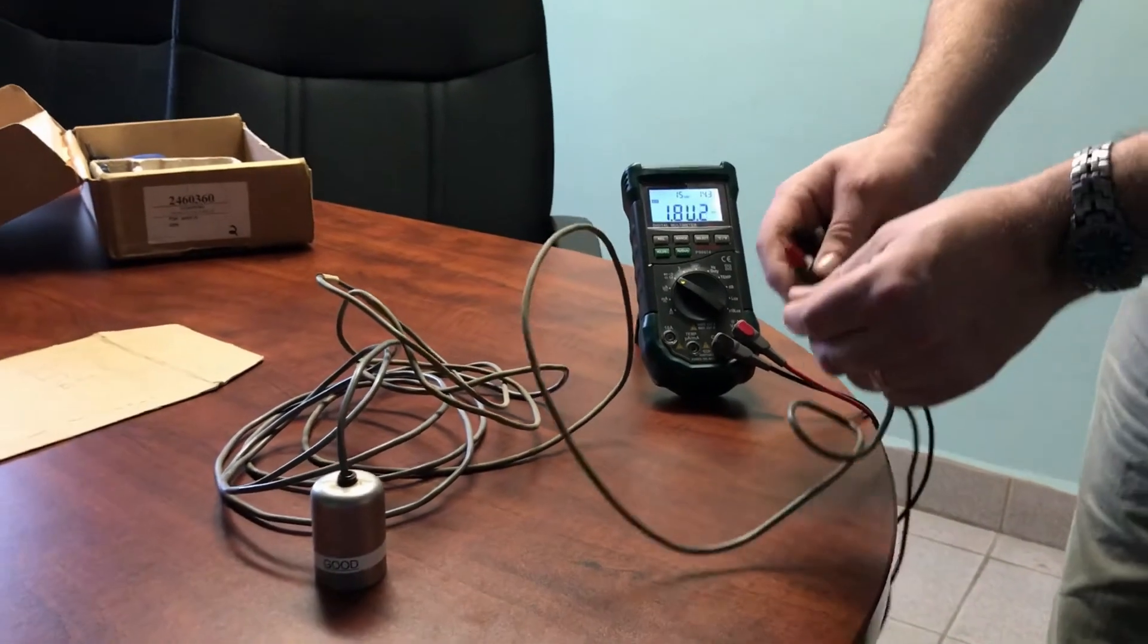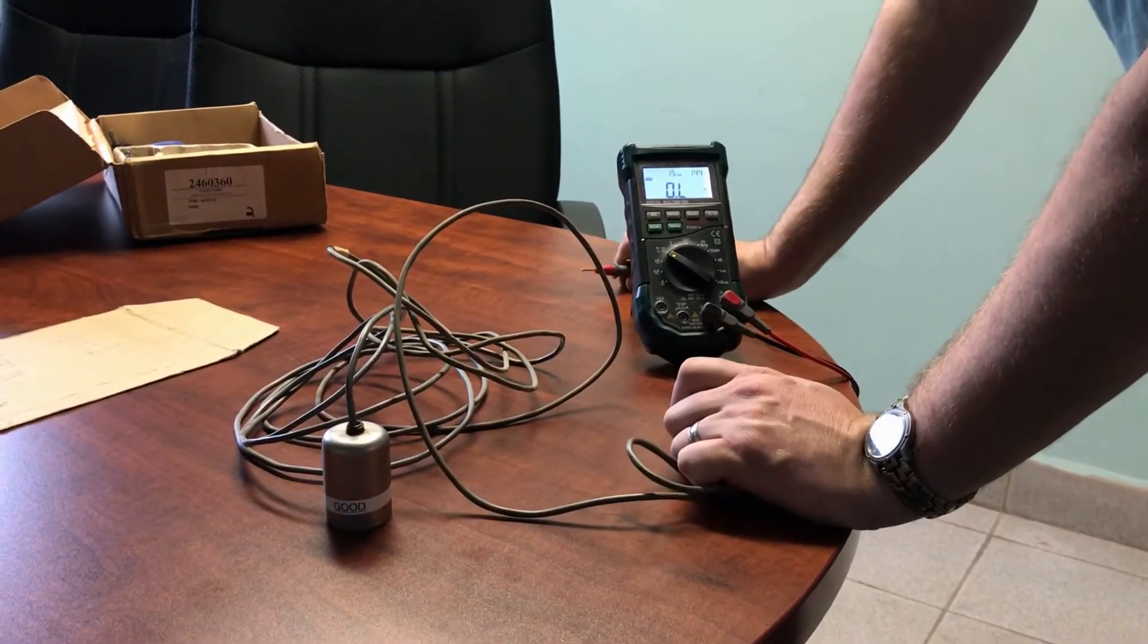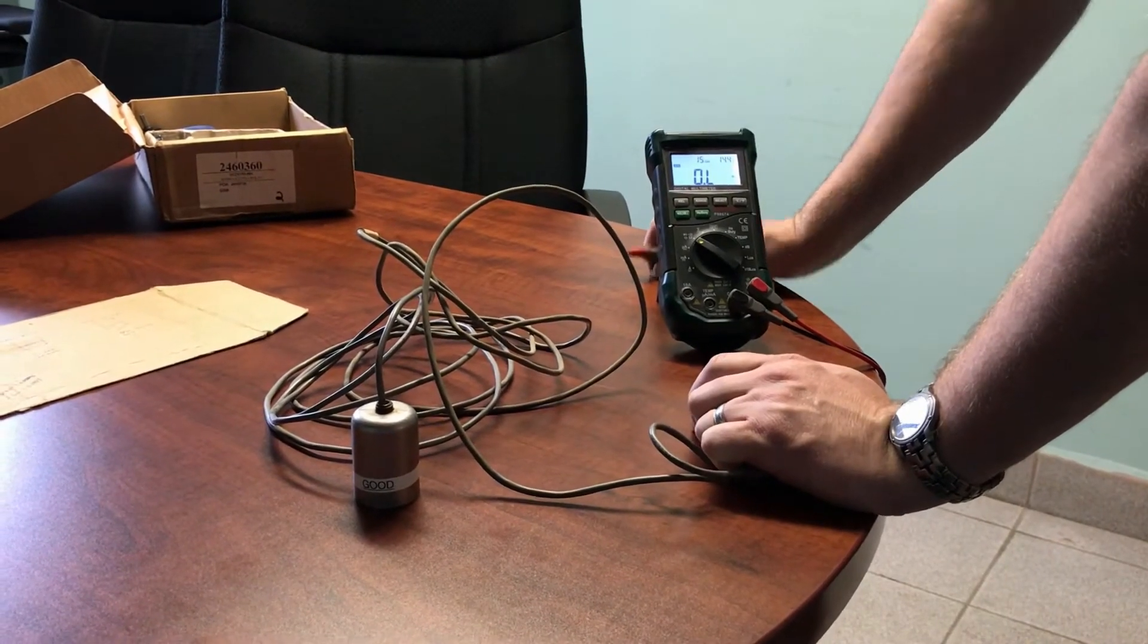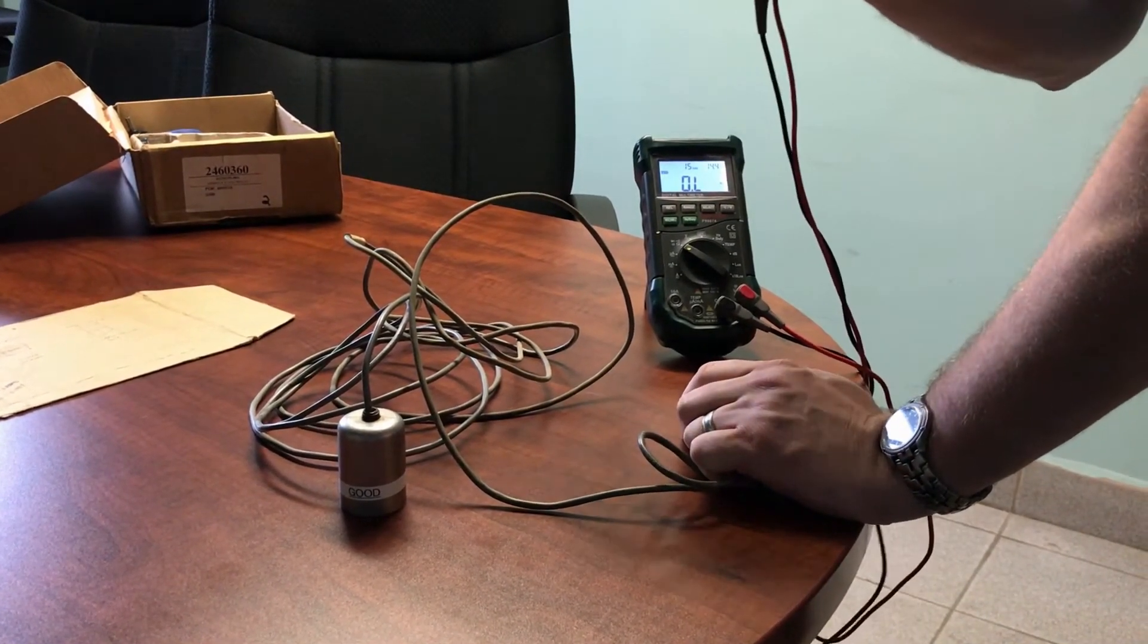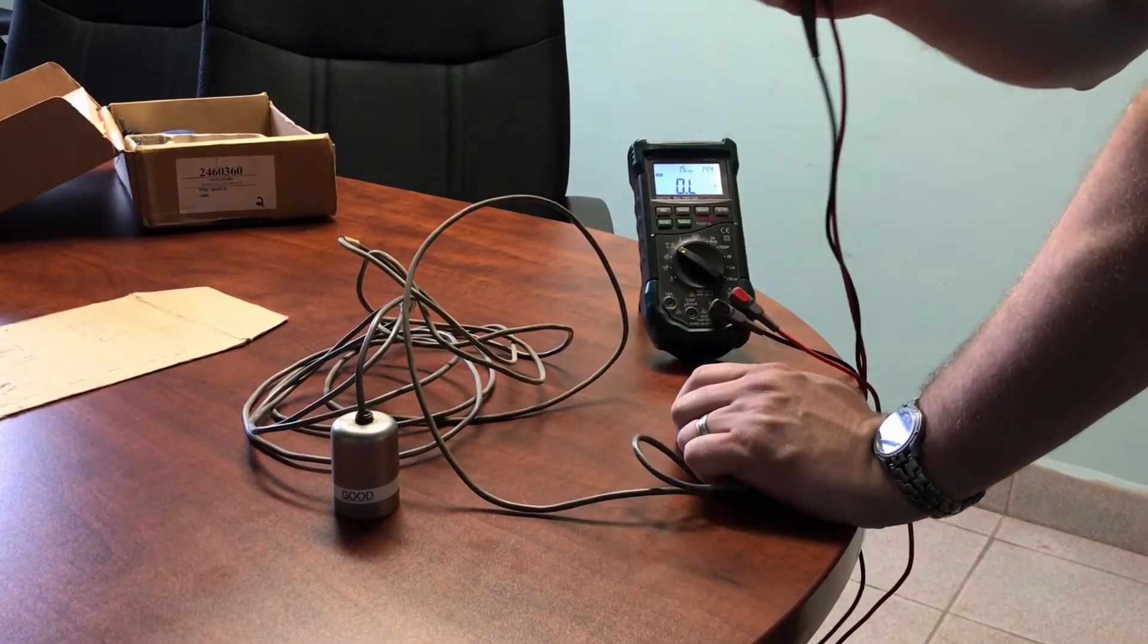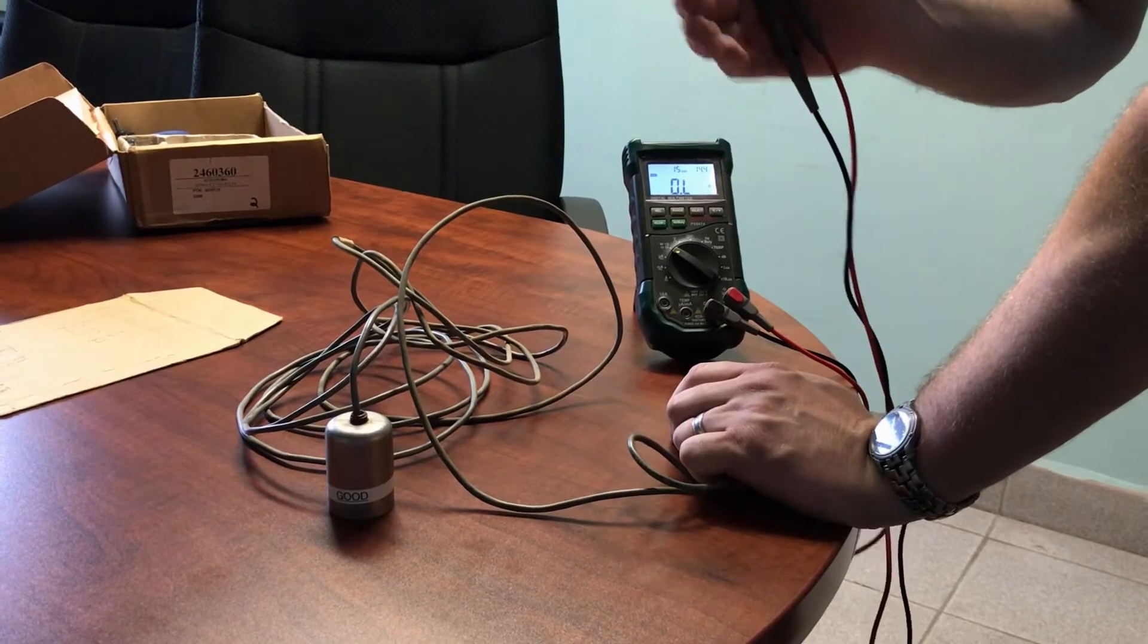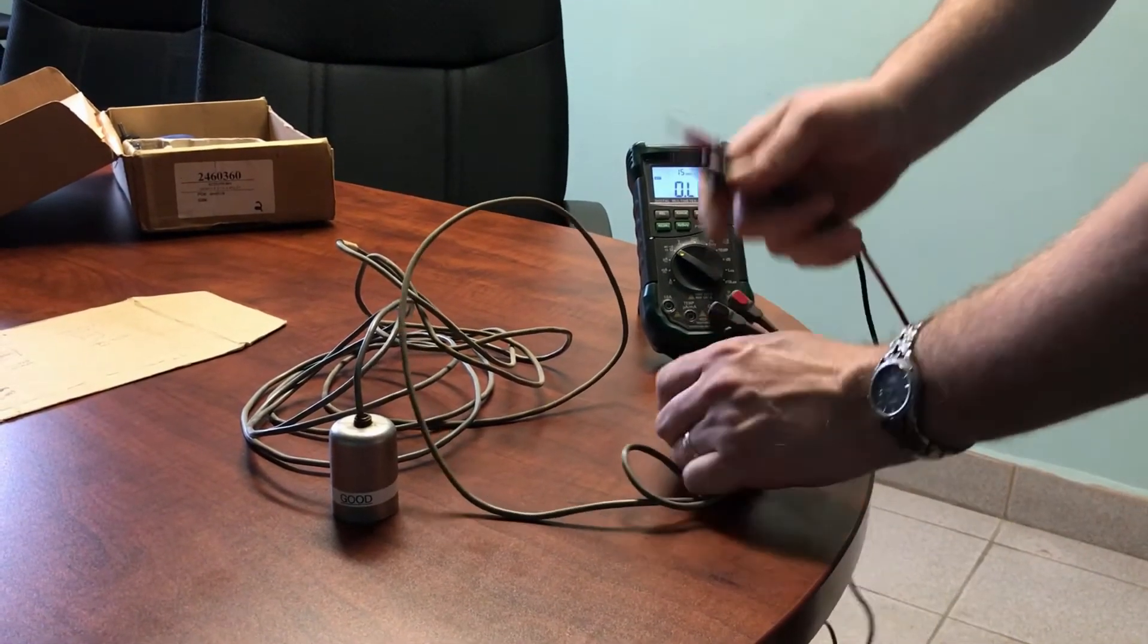These are set up to be fault detection, so as long as the VitaRoot sees that ohm reading inside the detection circuit, it knows that it has a sensor on the end. So the second state is a closed condition or an alarm condition.